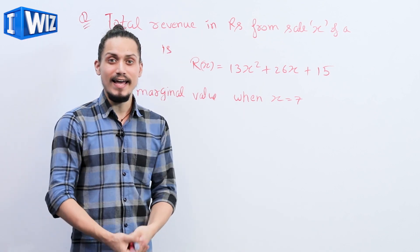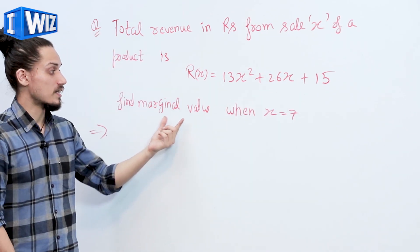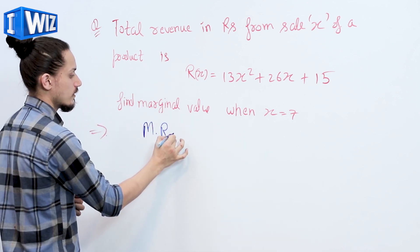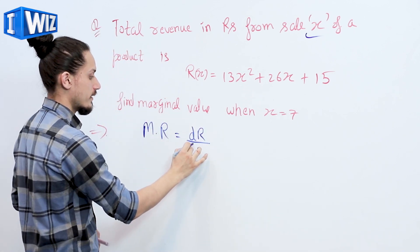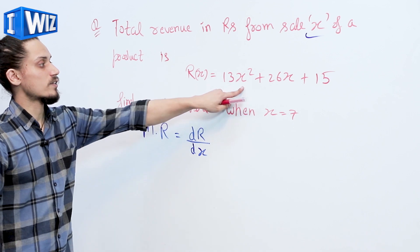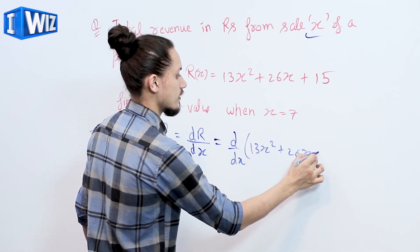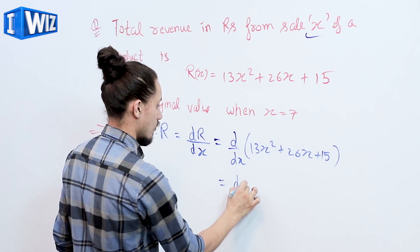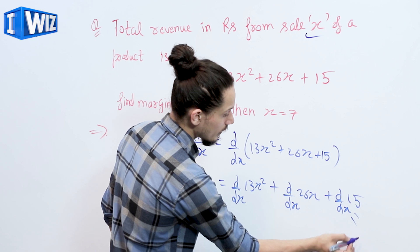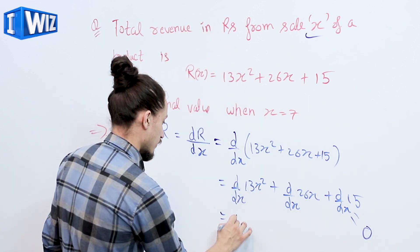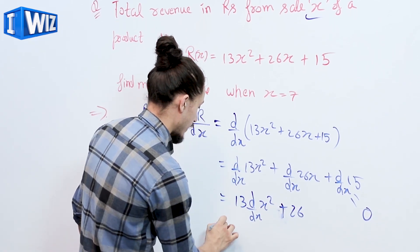In this example, the total revenue in rupees from sale of x units of a product is R(x) equals 13x squared plus 26x plus 15. We have to find the marginal revenue when x equals 7. Marginal revenue is the rate of change of revenue with respect to total units sold, so marginal revenue equals d/dx of R. We get d/dx of (13x squared plus 26x plus 15), which equals 13 times d/dx(x squared) plus 26.